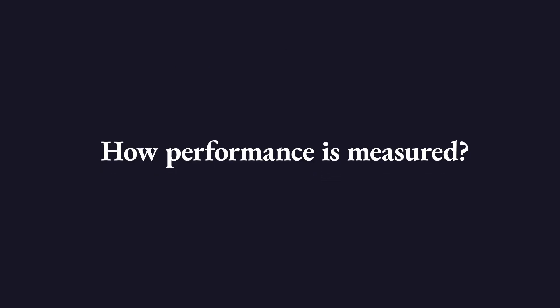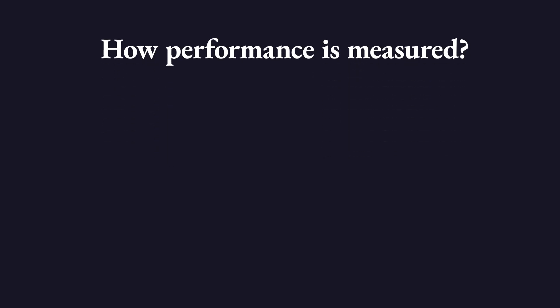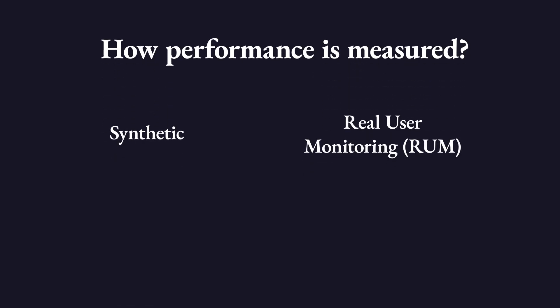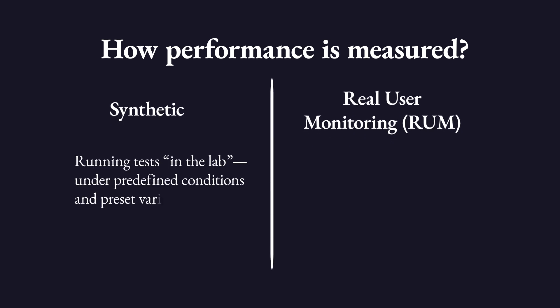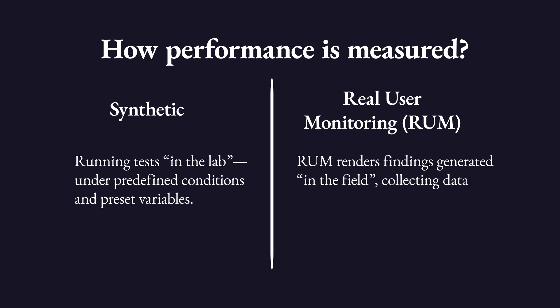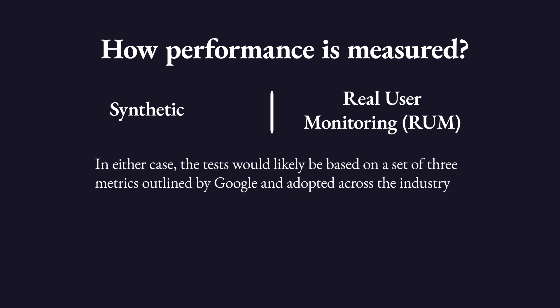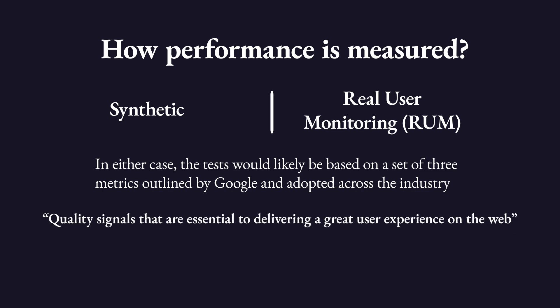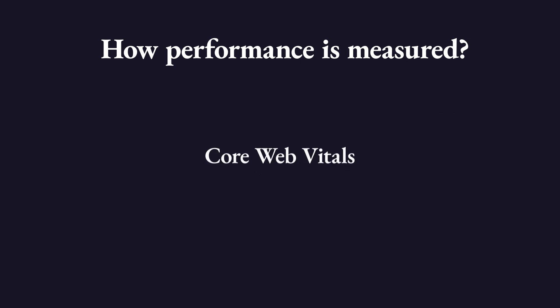How performance is measured. You can measure performance in two ways: synthetic and real user monitoring, or RUM. Both happen in the browser, but synthetic means running tests in the lab under predefined conditions and preset variables, while RUM renders findings generated in the field, collecting data from actual site visitors. In either case, the tests would likely be based on a set of three metrics outlined by Google and adopted across the industry as quality signals essential to delivering a great user experience on the web. They are known as core web vitals.